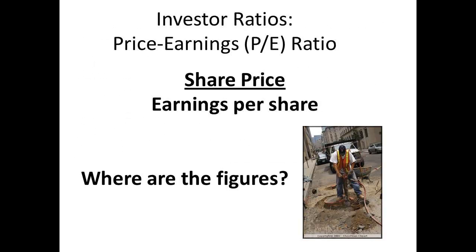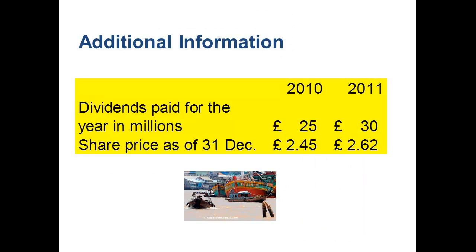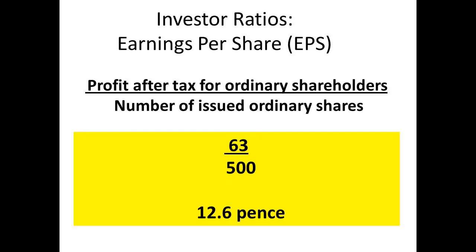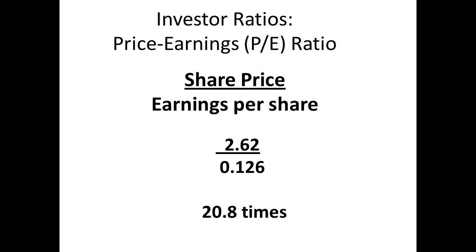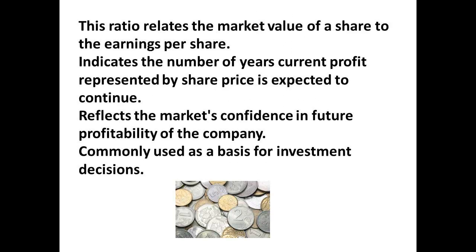The price-earnings ratio is the share price divided by the earnings per share. The share price is £2.62, and the earnings per share is the figure calculated previously: 12.6 pence. So, £2.62 divided by £0.126 gives us an answer of 20.8 times. This ratio relates the earnings per share to the current market value of the share. It is used as an indicator of future profitability and is a reflection of market confidence. Investors may use this to help make decisions on whether to buy shares in the entity.